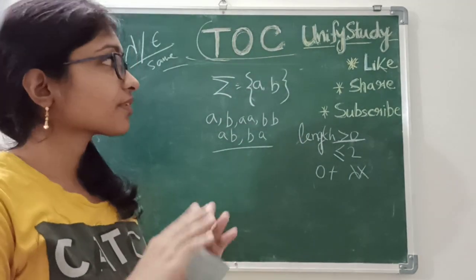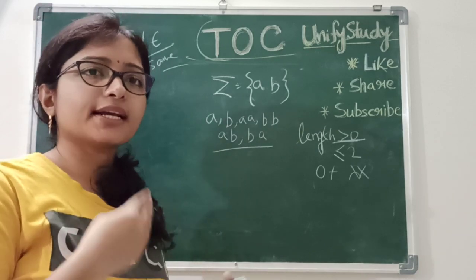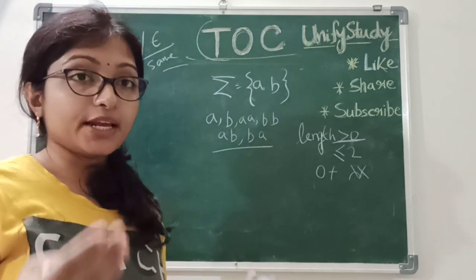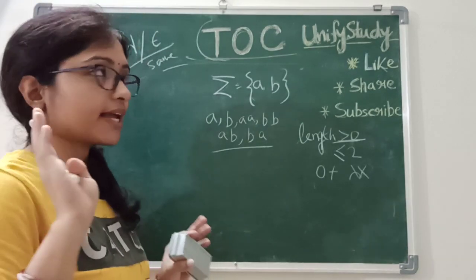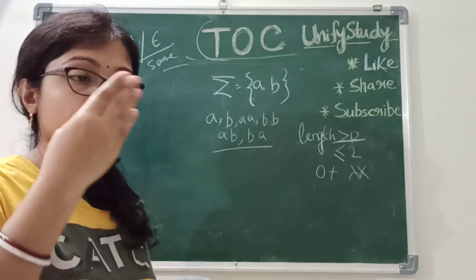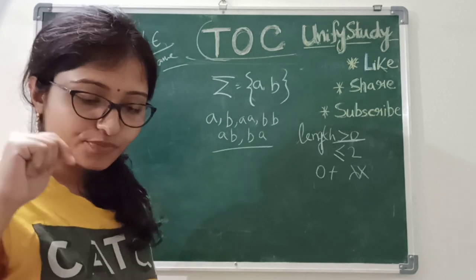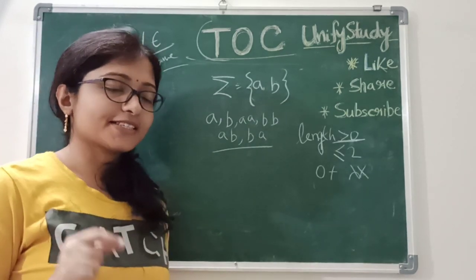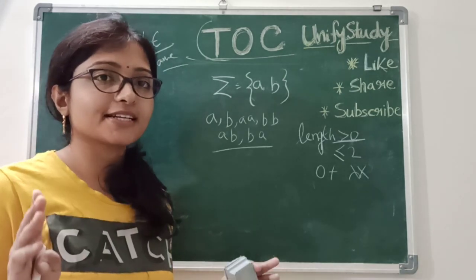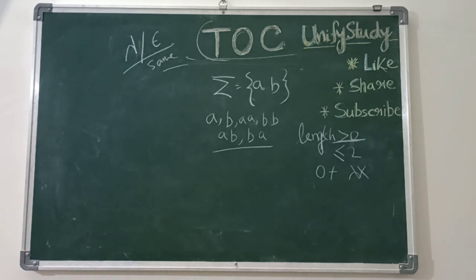So for this video, it was the introduction of TOC. I am giving something extra — think about when the alphabet is {0, 1}: what are the strings of length 0, length 1, and equal to 1? The main concept was what is lambda or epsilon in TOC. In my next video I will discuss what lambda actually is, what the difference is, what star is, and what phi is. If you are interested to continue this series, please let me know in the comments. Share this video, subscribe, and click the bell icon. Bye bye.